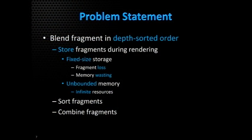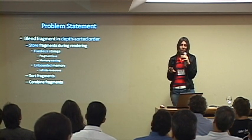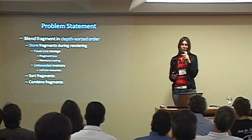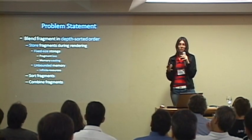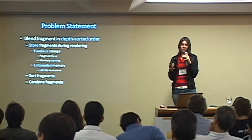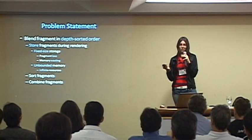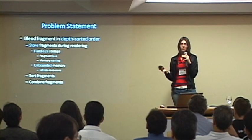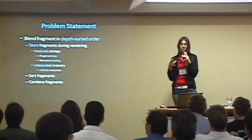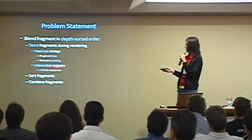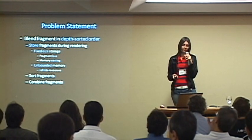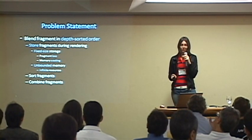So what is the problem? We need to blend fragments in depth-sorted order and we can do it by storing the fragments during rendering. We have two main trends to store those fragments. One uses pixel-size storage, where we risk losing fragments and wasting memory because not all pixels have many transparent layers. Or we use an unbounded memory structure, but we don't have physically infinite memory.